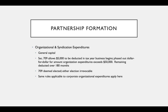On partnership formation there may also be organization and syndication expenditures, treated the same way as corporate organization expenditures. The general rule is to capitalize these, but Section 709 allows immediately expensing $5,000 of them in the tax year business begins. That $5,000 is phased out dollar-for-dollar for organization expenditures exceeding $50,000. The remaining amounts can be deducted over 180 months. Section 709 is deemed elected, but if you choose not to elect it, the choice is irrevocable.